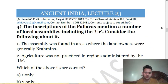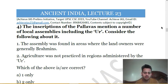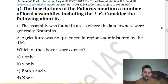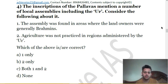Fourth question: the inscriptions of the Pallavas mention a number of local assemblies, including the Ur. Consider the following about it. First, the assembly was found in areas where the landowners were generally Brahmins. Second, agriculture was not practiced in regions administered by Ur.